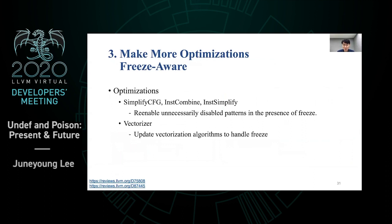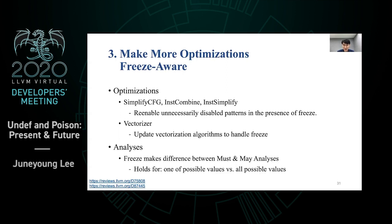Finally, we can make more optimizations and analyses aware of freeze. Updates in SimplifyCFG are important because we know miscompilations that require branch conditions to be frozen. InstCombine and InstSimplify have many patterns, but fixing patterns that appear in practice may be enough to minimize effects on compilation time. Currently freeze blocks vectorization because vectorizers are not aware of freeze. To support freeze in analysis, it is important to know whether the analysis is must or may, because handling of freeze differs greatly — must analysis results should hold for all possible values, whereas may analysis results need hold for only one possible value. This distinction is not clearly made in LLVM currently.